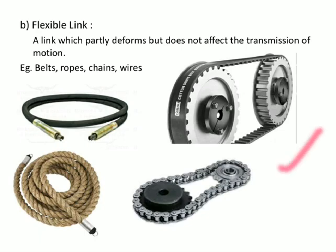Ultimately a belt or rope has a tight side and a slack side. The belt or rope deflects, but motion transmission is not affected. This type of link is called a flexible link.